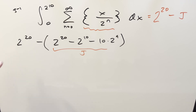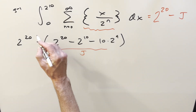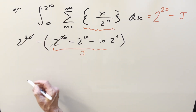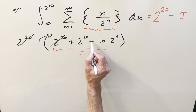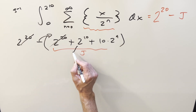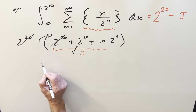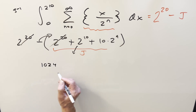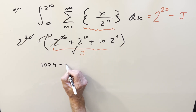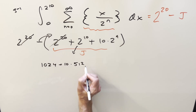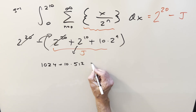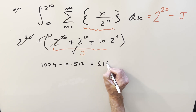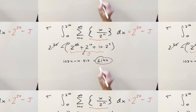Finally, we get to cancel the 2^20 terms, which go to zero. Distributing the minus sign — minus times minus is plus — we have 2^10 + 10 times 2^9. Since 2^10 is 1024 and 2^9 is 512, that gives us 1024 + 10 times 512 = 1024 + 5120 = 6144.